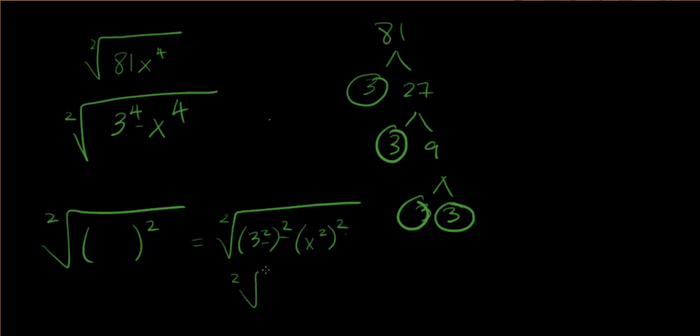Now I can go ahead and consolidate that. And I have 3 to the 2nd and x to the 2nd to the 2nd. So whatever is in here, I can go ahead and take out, because there's 2 of it. So that's 3 to the 2nd, x to the 2nd, which is 9x to the 2nd.